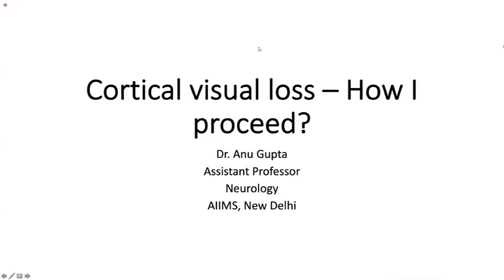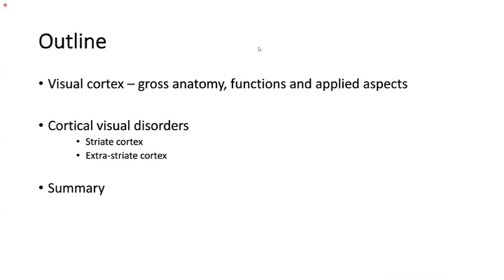The topic for today is how to approach cortical visual loss. The outline will first recapitulate important anatomical aspects related to this topic, followed by the cortical visual disorders — the more clinical aspects — including disorders related to the striate cortex and the extra-striate cortex, followed by a summary of the presentation.